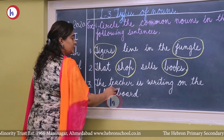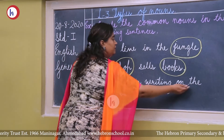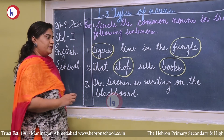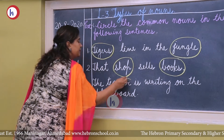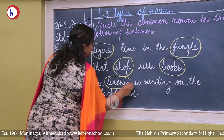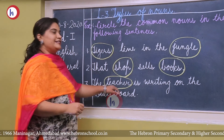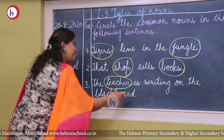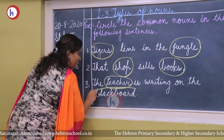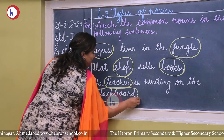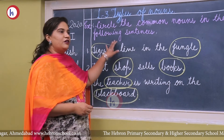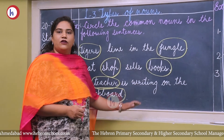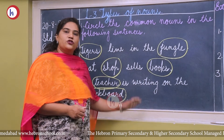Number three — 'The teacher is writing on the blackboard.' 'Teacher' is the name of a person; 'blackboard' is the name of a thing. So we have learned about common nouns. The rest of the sentences are given in PDF format on the school website; you just have to write them down from there.